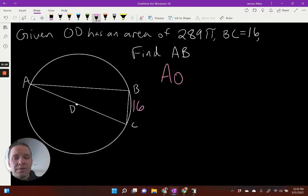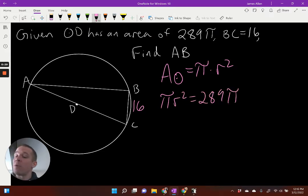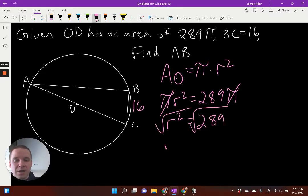Well, I know the area of a circle is equal to π times my radius squared. So if I know the area, I could set up an equation of πr² equals 289π. When I solve this, I can divide by π, which would cancel my pies. So I'm going to have r² equals 289, square root on both sides to solve, and I'll get r equals 17.